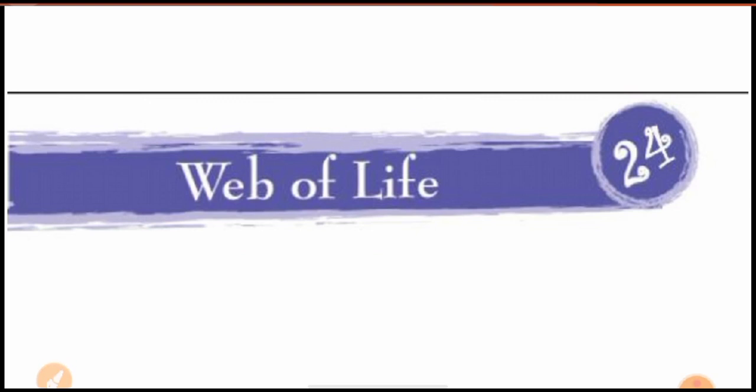In nature, in the environment where we live, we see different natural and man-made things. Natural things include plants, animals, sun, rain, and wind. Among natural things, there are some living things and some non-living things. We will talk about living things and non-living things, and you will see all these things are interdependent in the environment. This interdependence makes the wave of life.